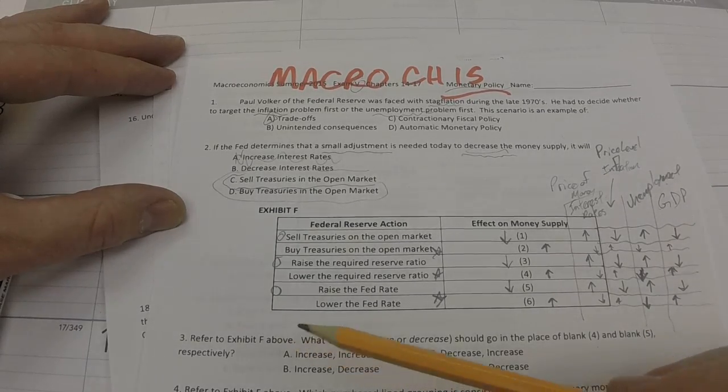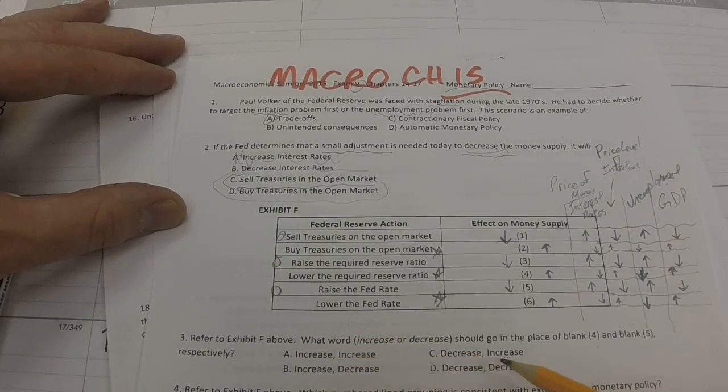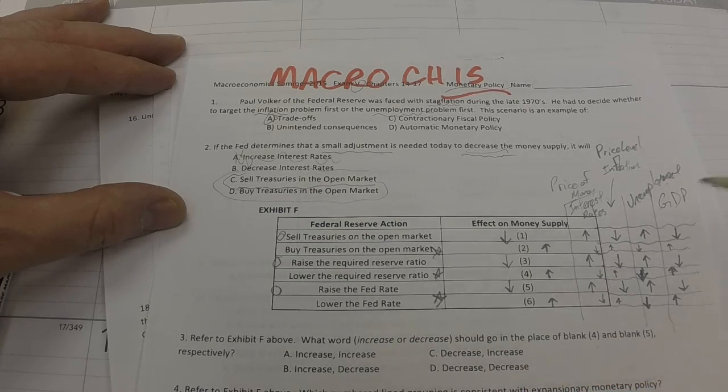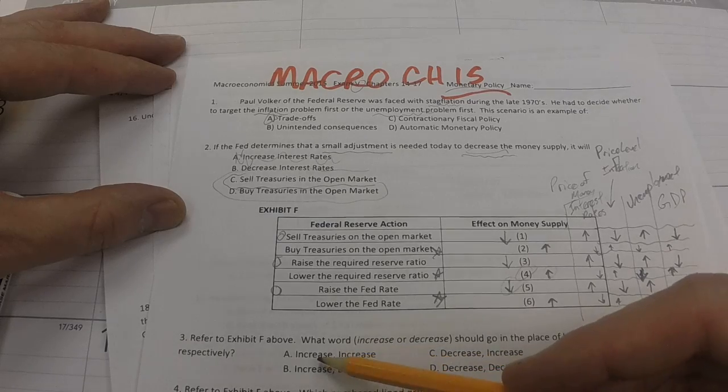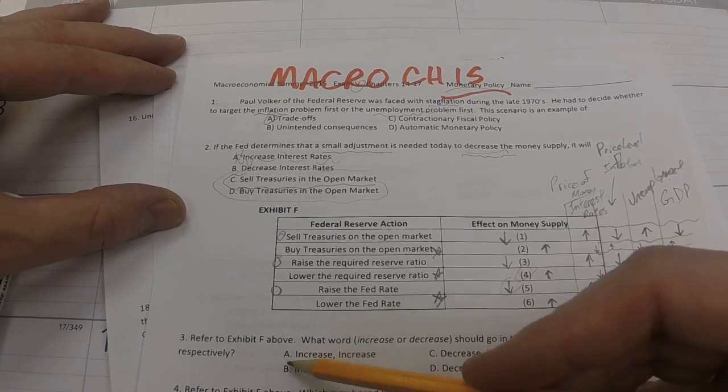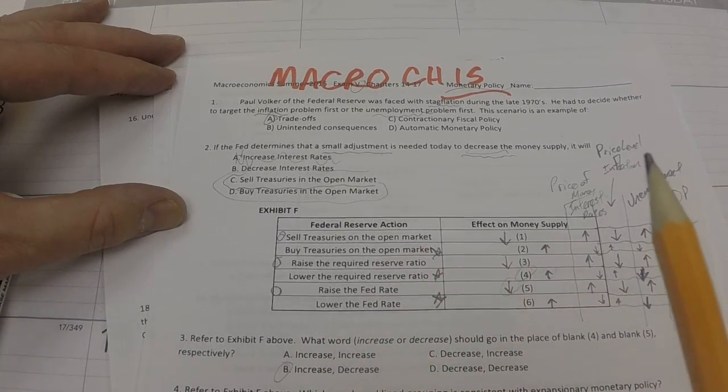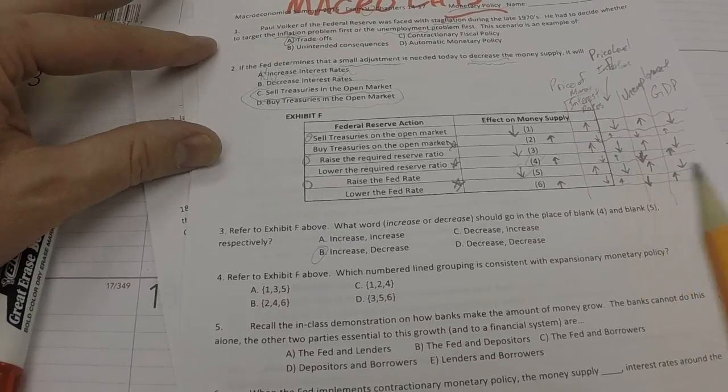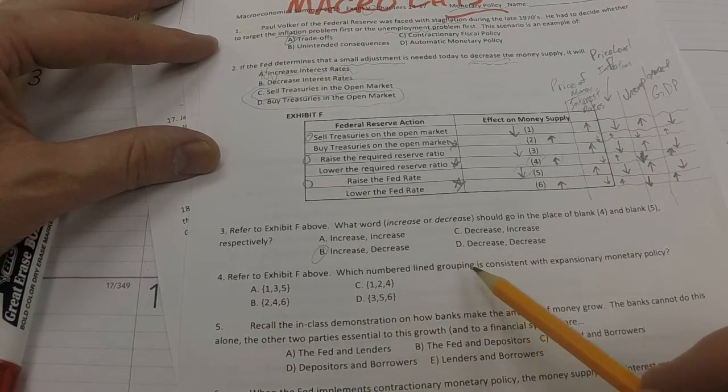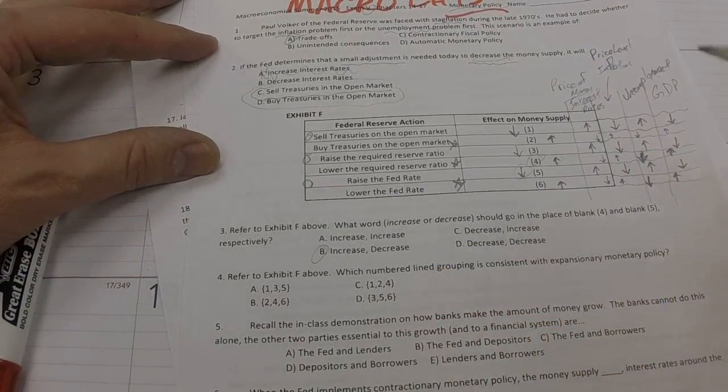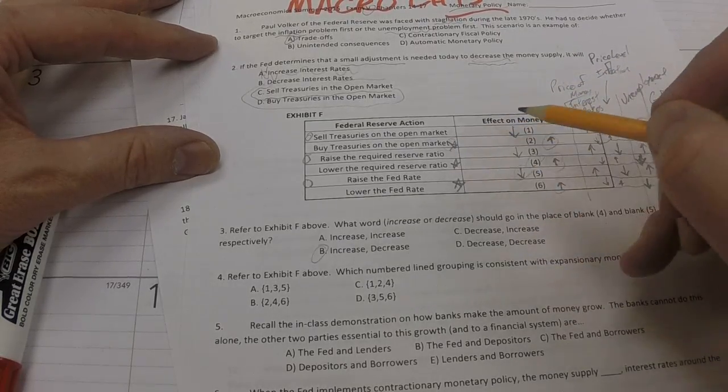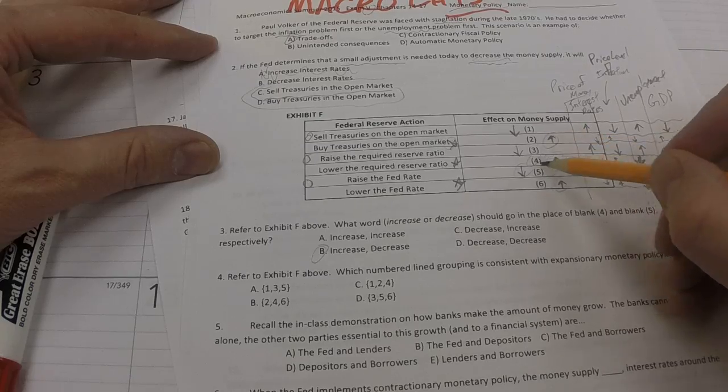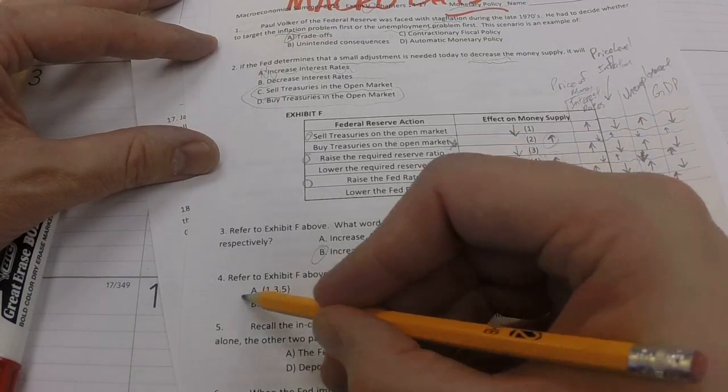All right. Now let's look at exhibit F. What word, increase or decrease, should go in place of blank 4 and 5? Let me see. Increase and decrease. Answer B. Refer to the next one here. What does it say? Which numbered line grouping is consistent with expansionary monetary policy? So up, up, up. It goes with buying treasuries. Oh, I'm sorry. It's 2, 4, and 6. There we are. 2, 4, 6. There we are. B.